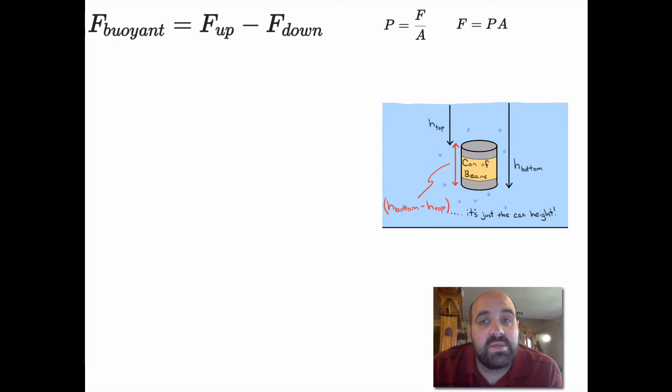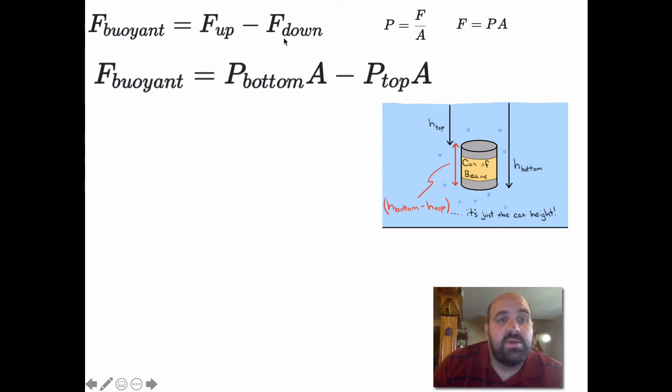We know that force equals pressure times area. Why? Because pressure is force over area, and we can do a simple algebraic manipulation. F = PA. What we're going to do is plug this PA in for both of these. We're going to have PA up minus PA down. So buoyant force equals PA up minus PA down. By PA up, we mean the pressure on the bottom because that's pushing up. Pressure on the bottom times the area on the bottom. And the force down is the pressure pushing down on the top times the area pushing down. So buoyant force equals PA bottom minus PA top. So far, so good.